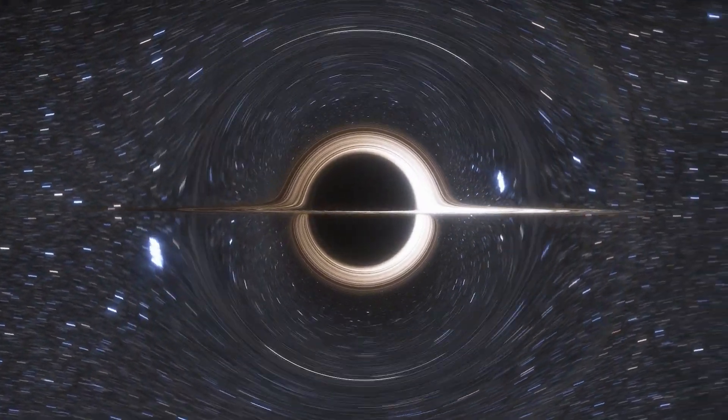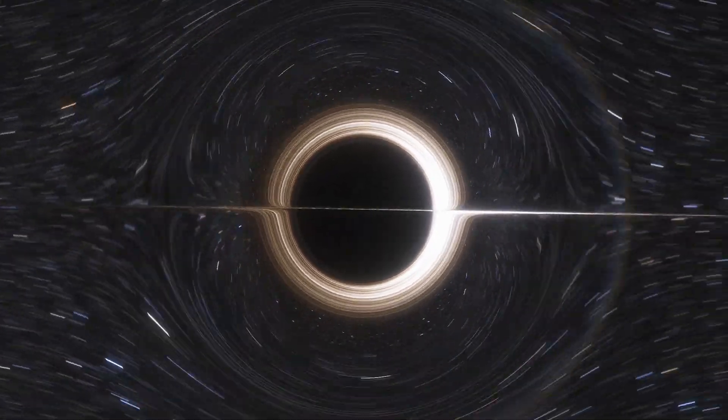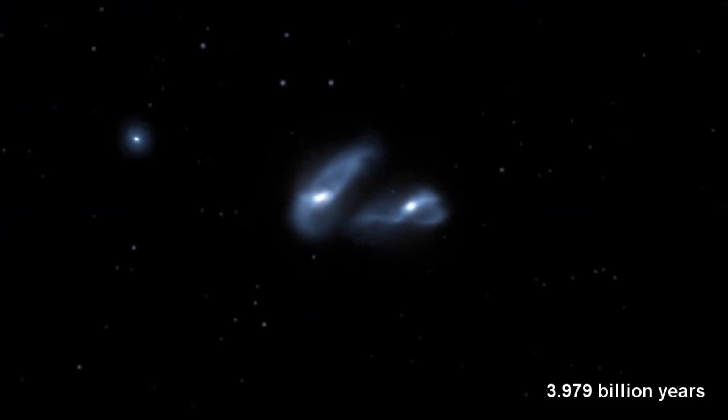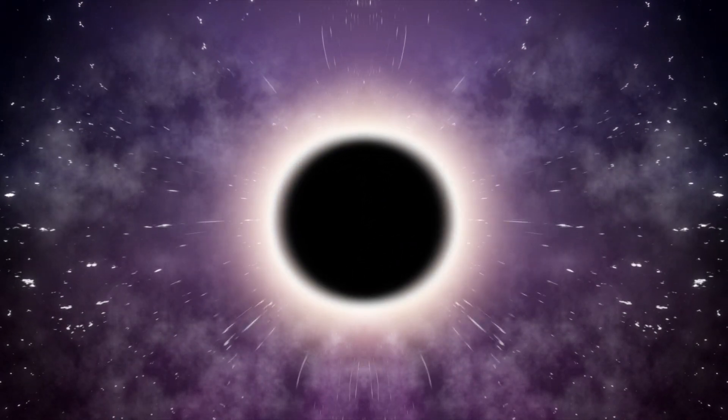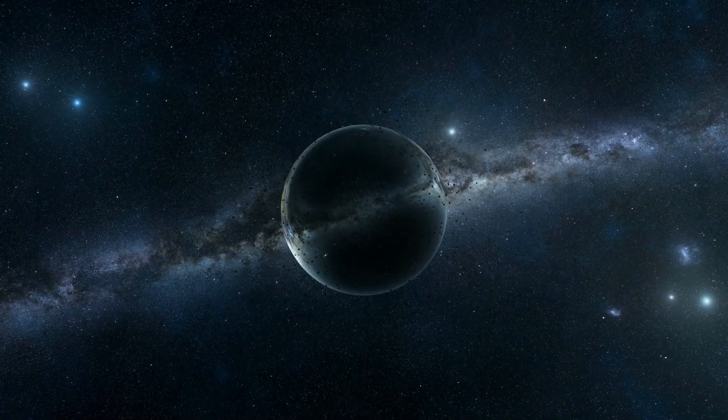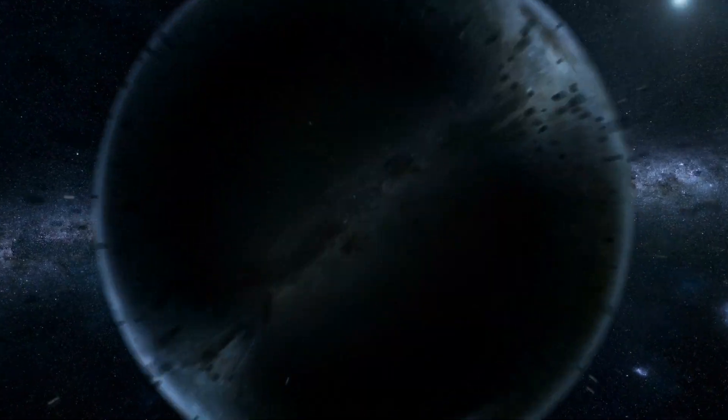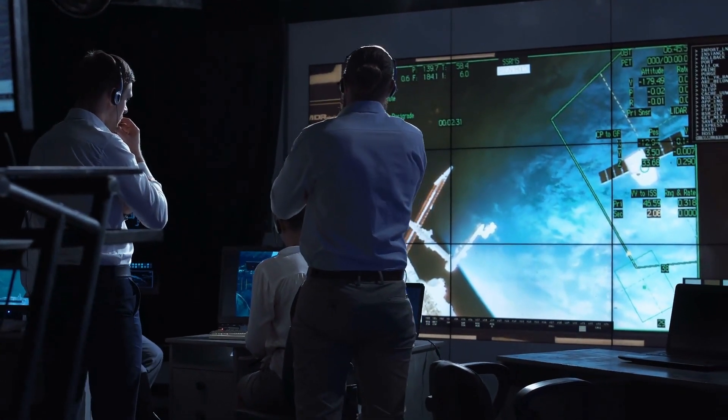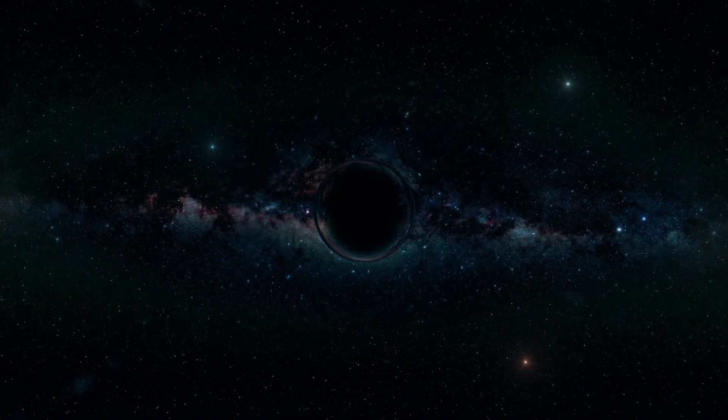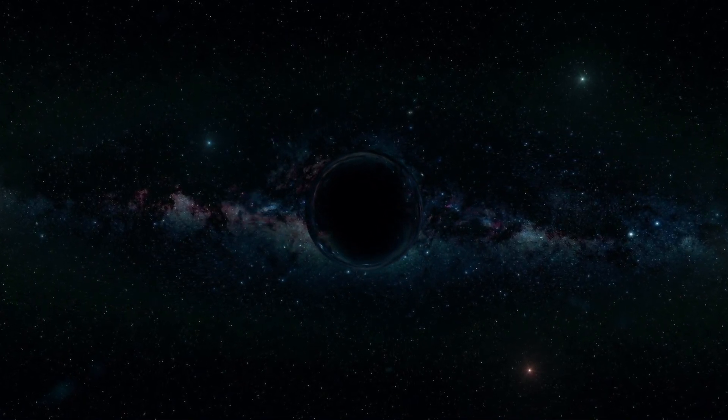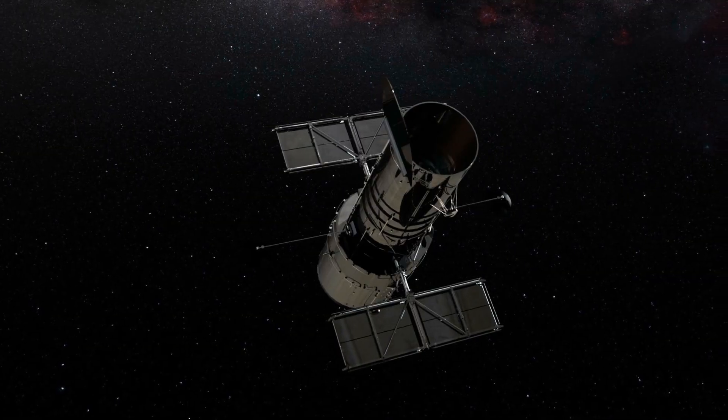A rogue black hole is an interstellar object without a host galactic group. They are caused by collisions between two galaxies when the merging of two black holes is disrupted. It has been estimated that there could be 12 rogue black holes in the Milky Way galaxy. In January 2022, a team of astronomers reported on the first unambiguous detection and mass measurement of an isolated stellar black hole using the Hubble Space Telescope.